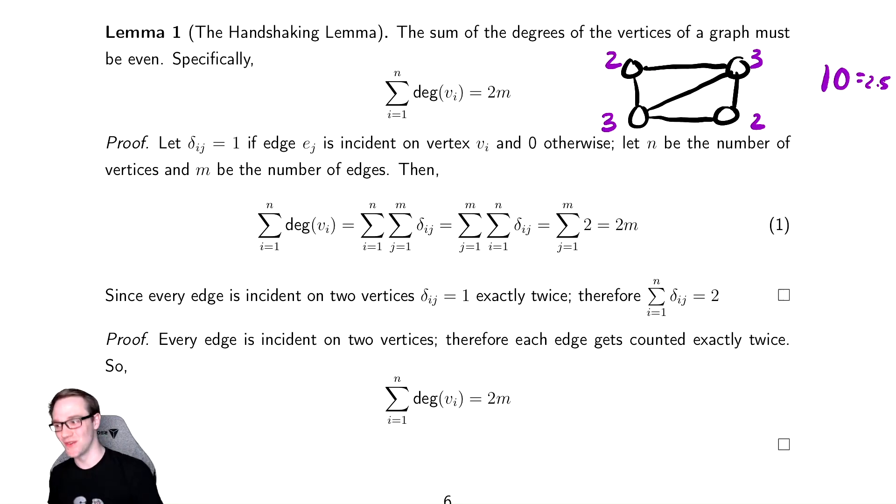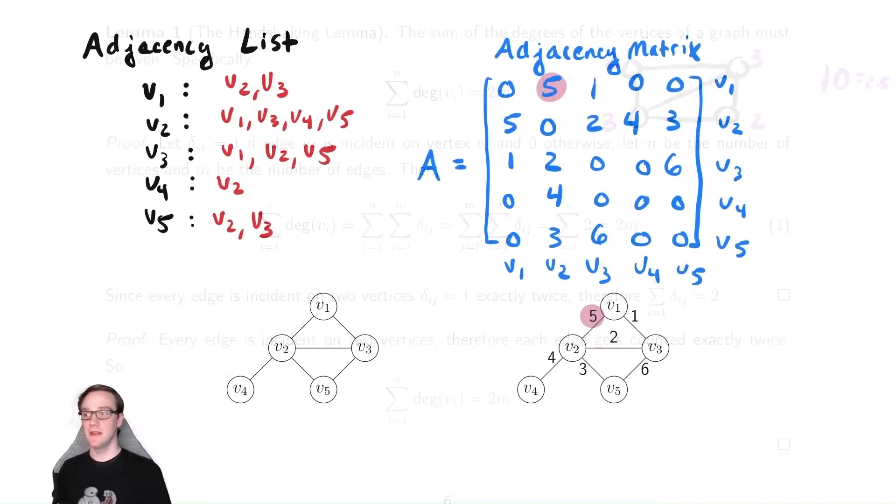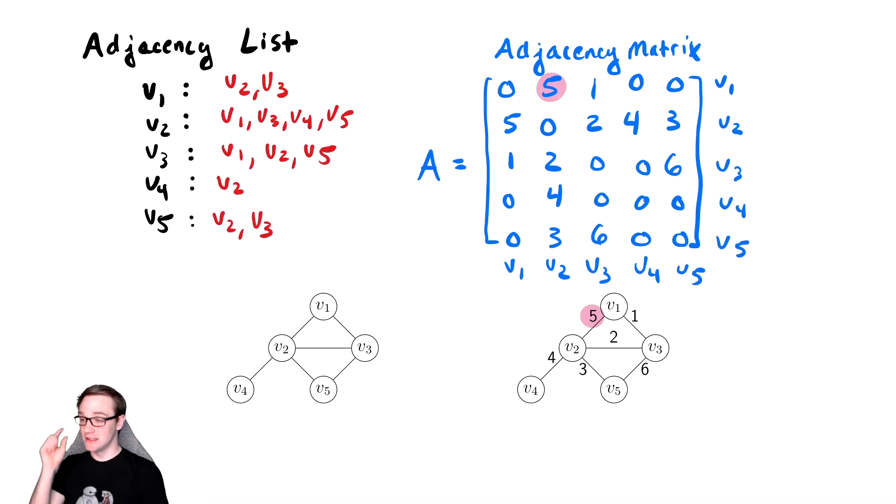Why is this useful? If you remember the adjacency list format that we had, in this format, the length of each of those lists turns out to be the degree of the vertex. So the total amount of storage required for an adjacency list representation turns out to be two M.